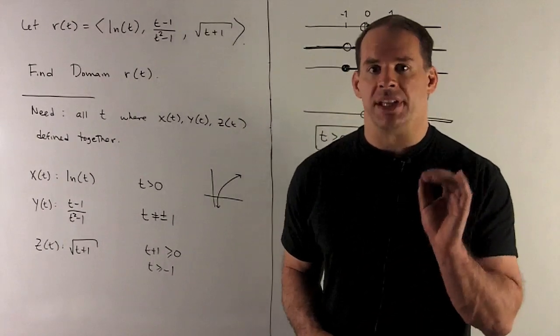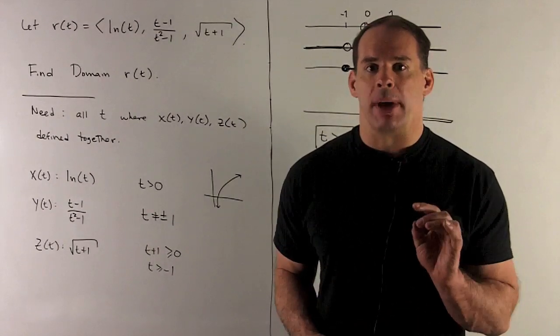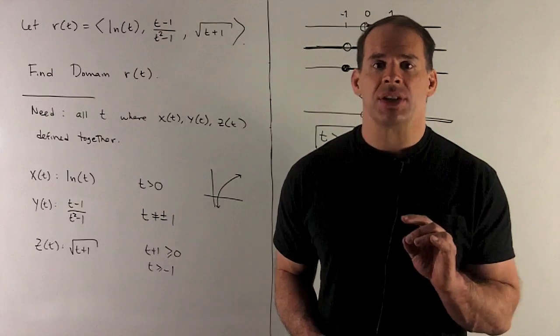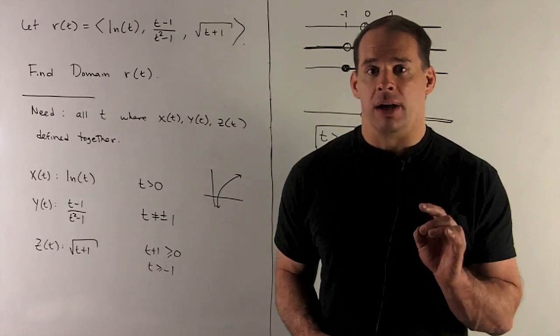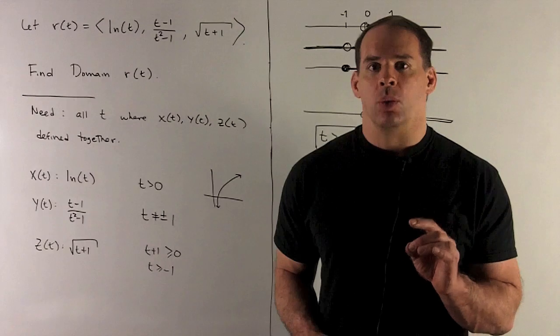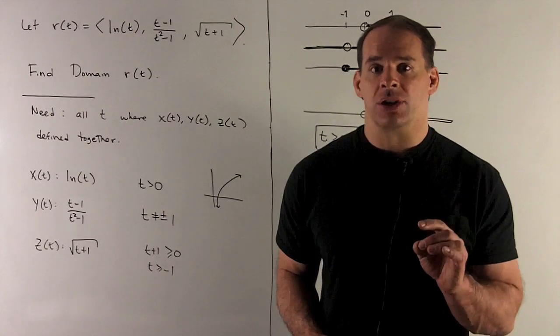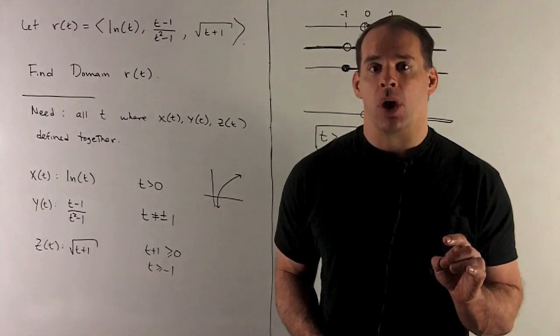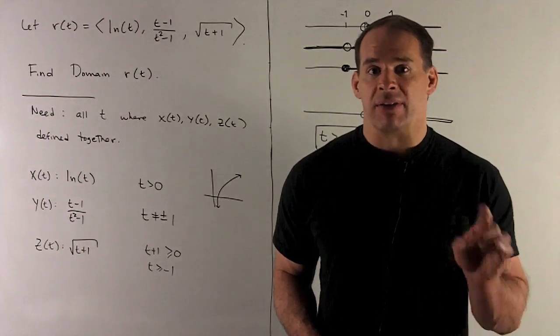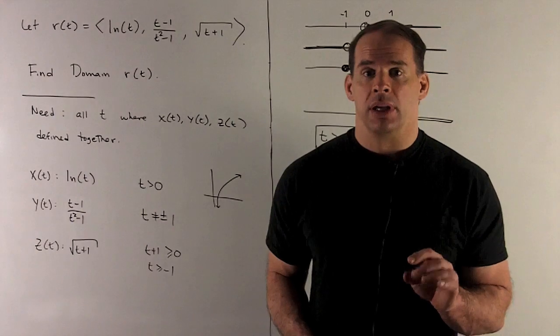Okay, y(t), t minus 1 over t squared minus 1. In this case, you're only in the domain of a rational function where the denominator is non-zero. So in this case, the denominator is going to be 0 at minus 1 and 1. So we keep everything else.